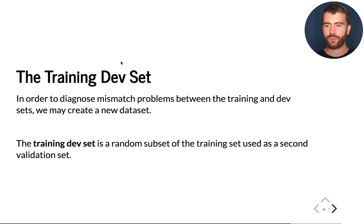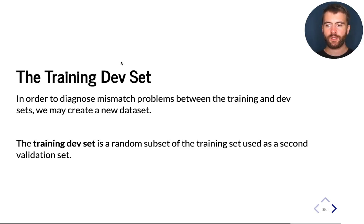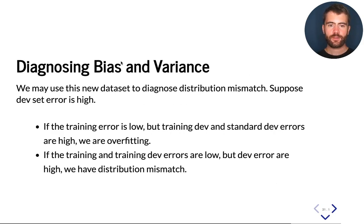So if we have 200,000 images in our training set, we may take 5,000 or 10,000 of them chosen at random and keep them as a separate validation set. Now we measure our performance after the model has been trained both on our standard development set and on our training-dev set. This data set allows us to diagnose bias, variance, and crucially, distribution mismatch.